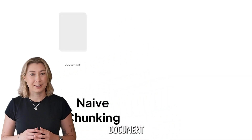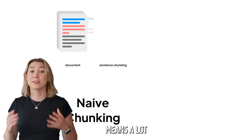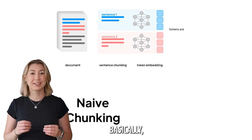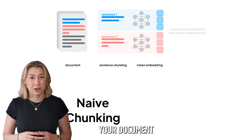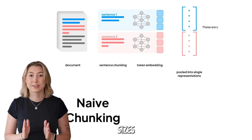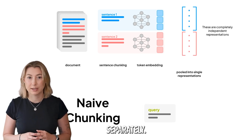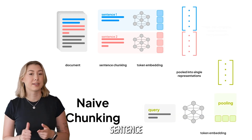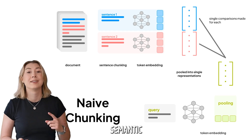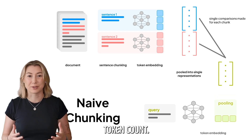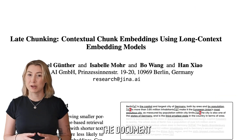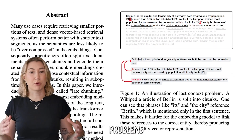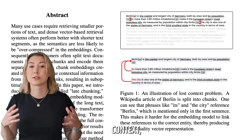Embedding an entire document into one vector means a lot of lost context and high resource costs — basically, it doesn't work. So you can chunk up your document into smaller sizes and embed each of those pieces separately. There's a ton of different options for techniques, whether it's sentence-based chunking, semantic chunking, or just based on token count. Unfortunately, because we break the document up and split connections, we can end up with problems like lost context.